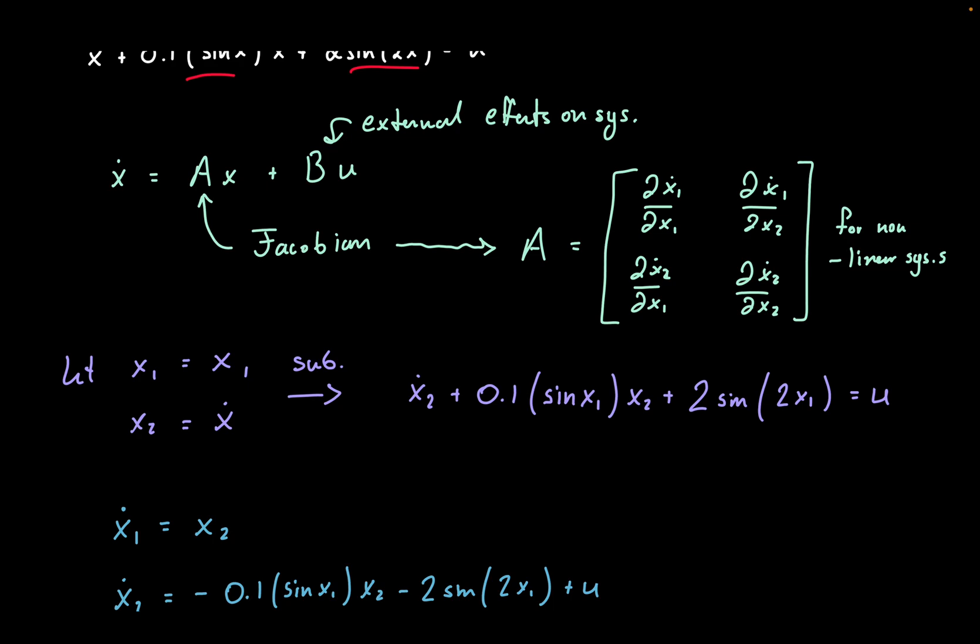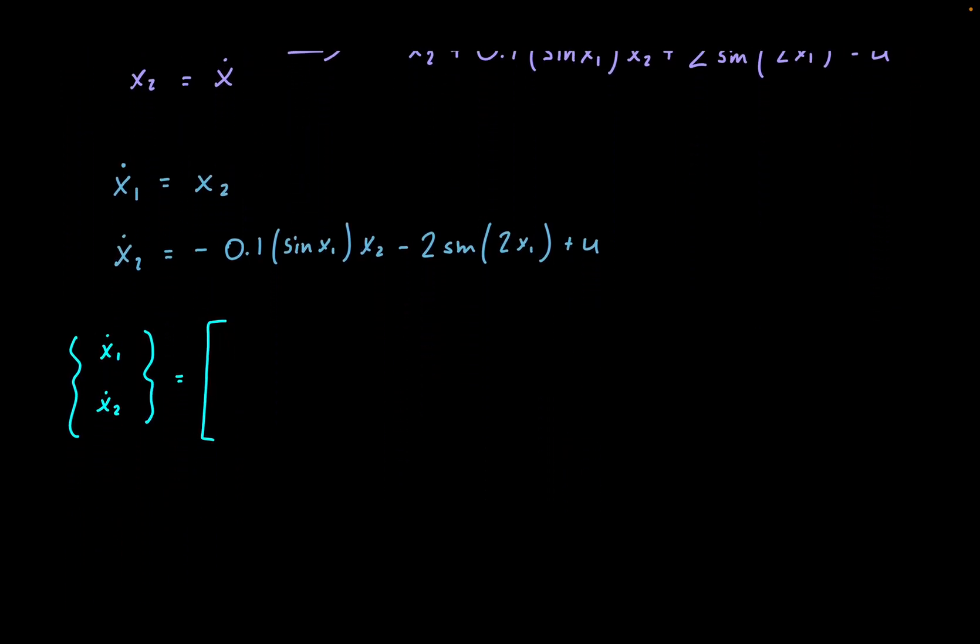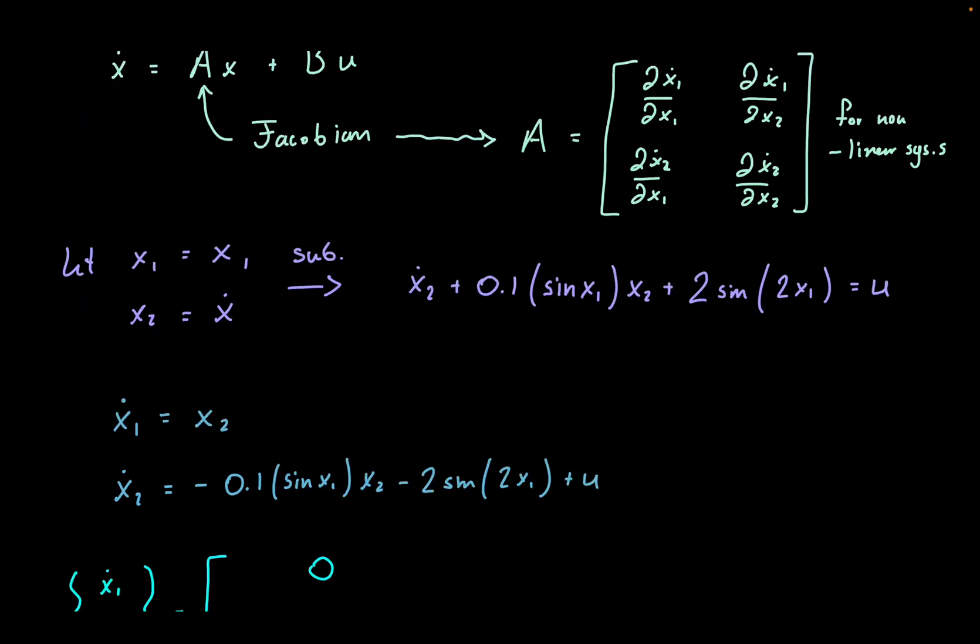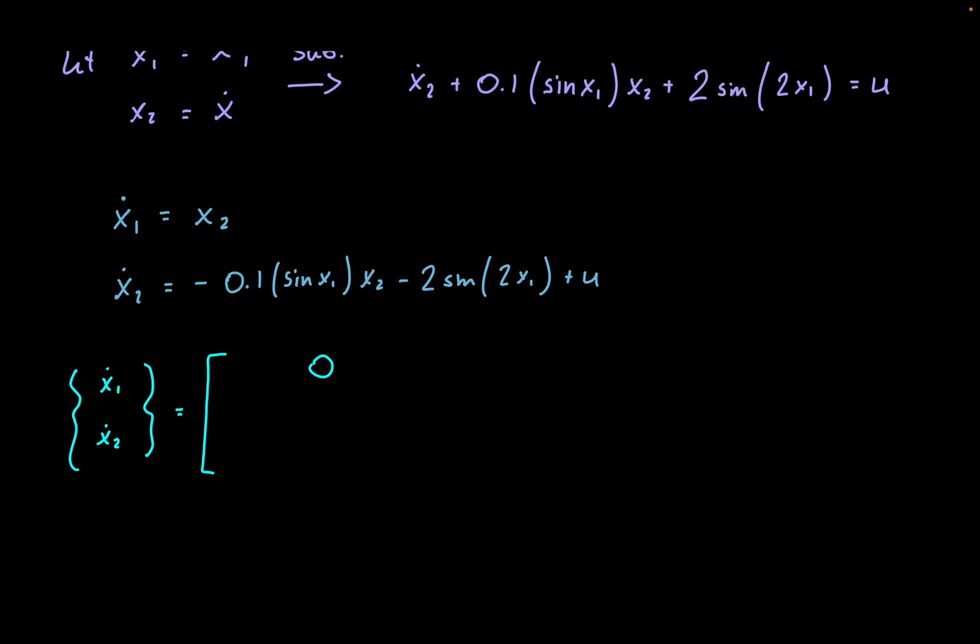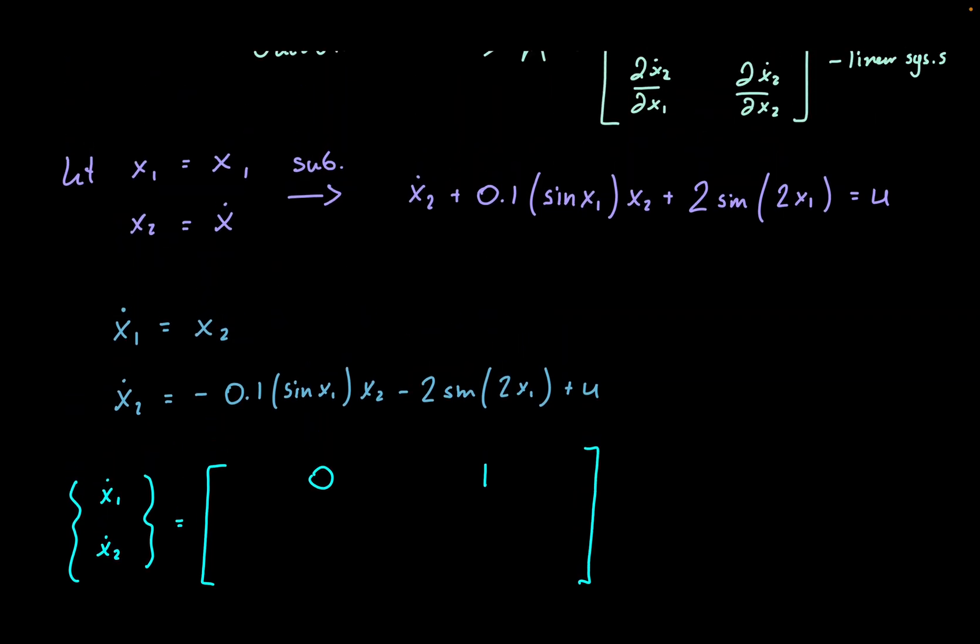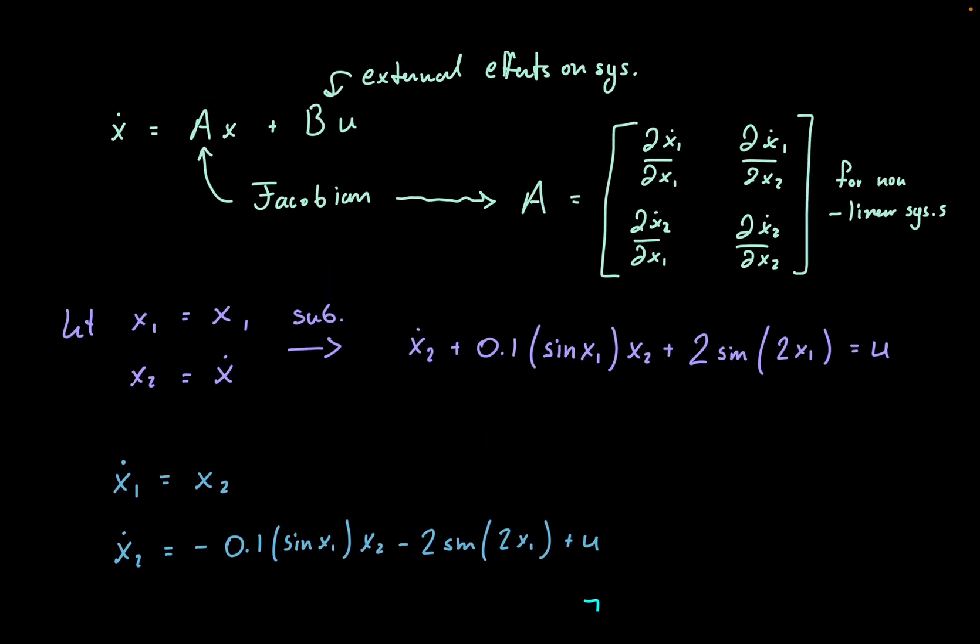With our first entry here, we'll take the partial derivative of x1 dot with respect to x1. But since we have no x1 in this equation, we are just left with 0. For the second entry here, we're going to take the partial derivative of x1 dot with respect to x2. Since we have an x2 in this equation, we're going to be left with a 1.